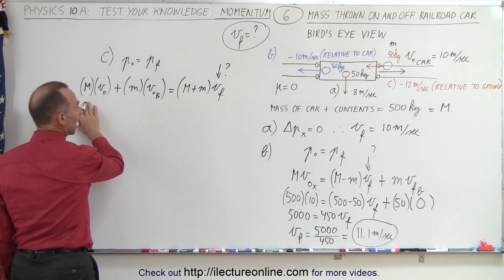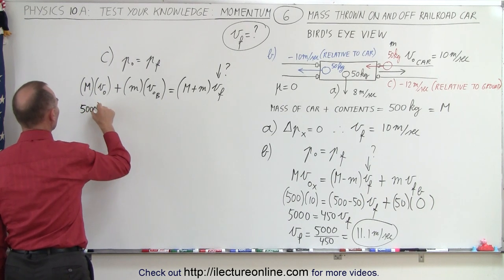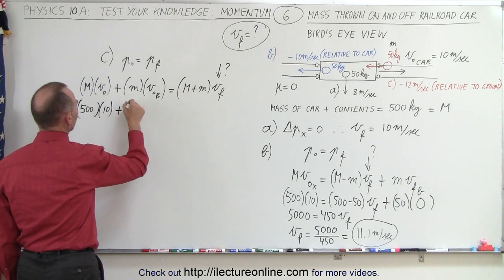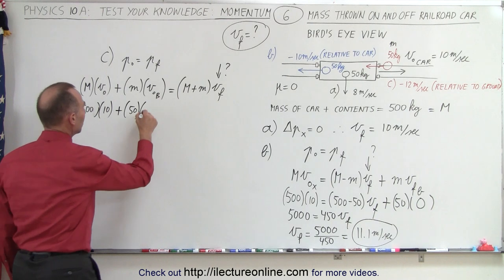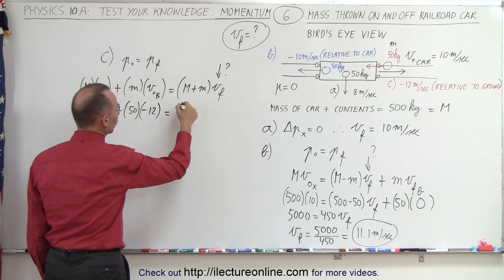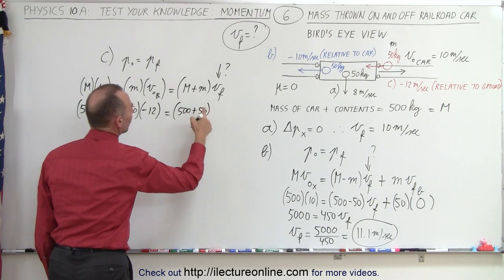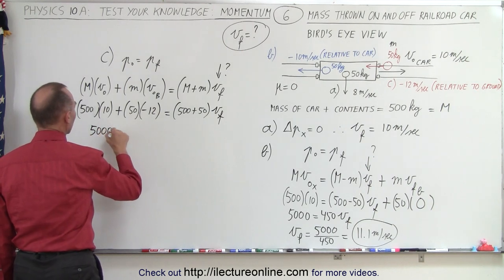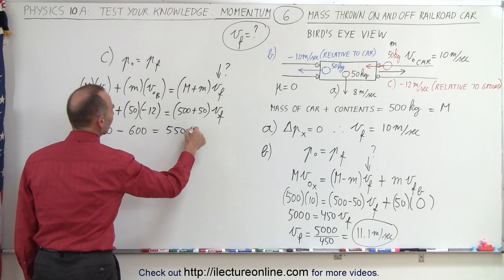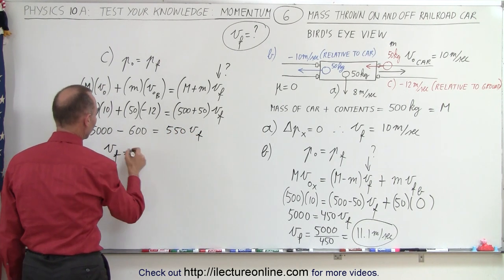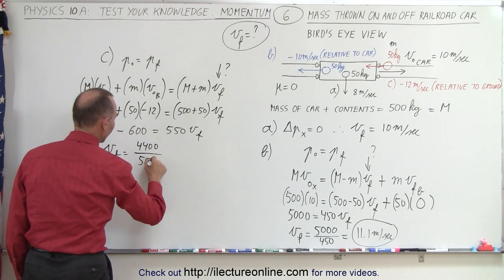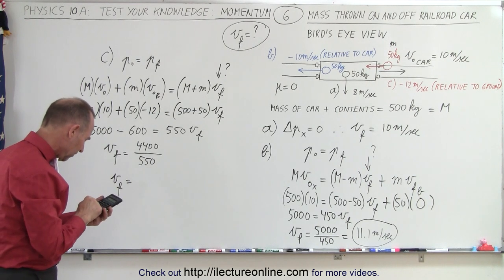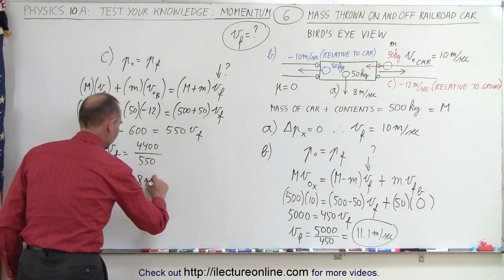The total mass of the train is 500 kilograms times 10 meters per second, plus 50 kilograms times minus 12 meters per second, equals 550 times V final. Simplifying: 5,000 minus 600 equals 550 times V final, so V final equals 4,400 divided by 550, which is exactly 8 meters per second.